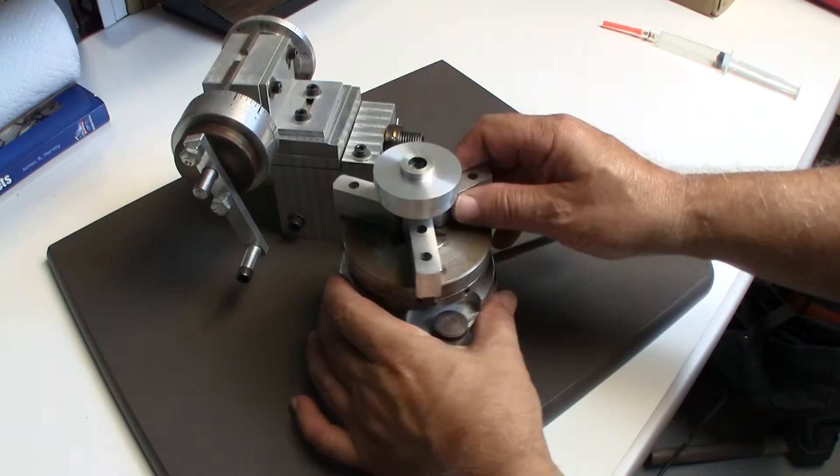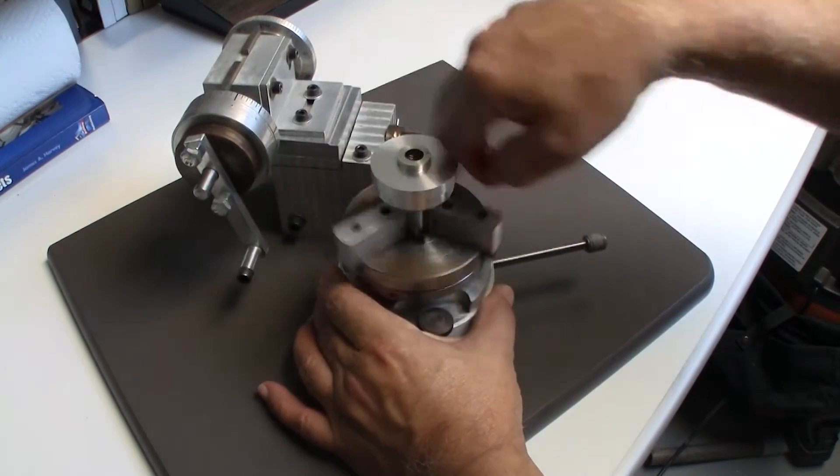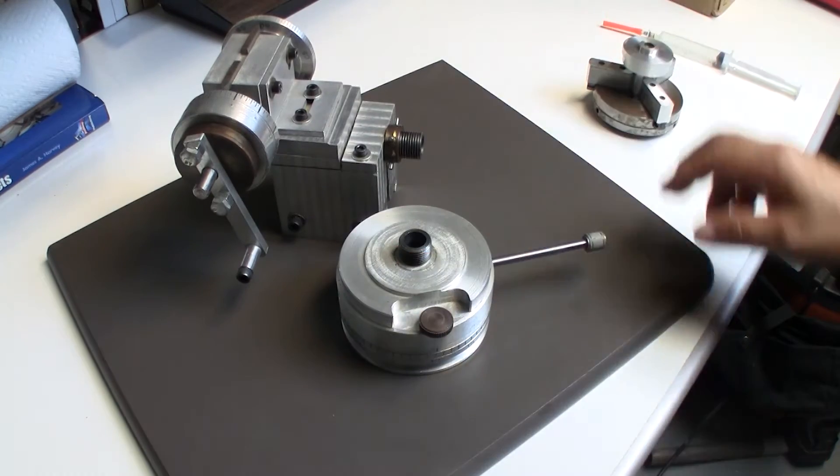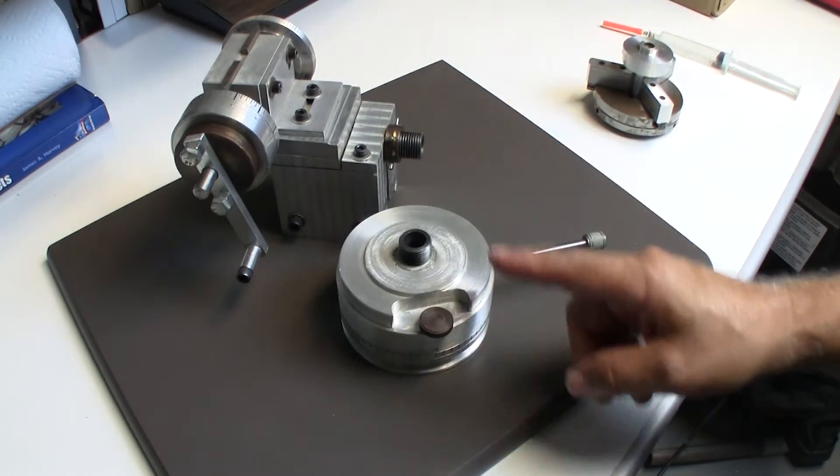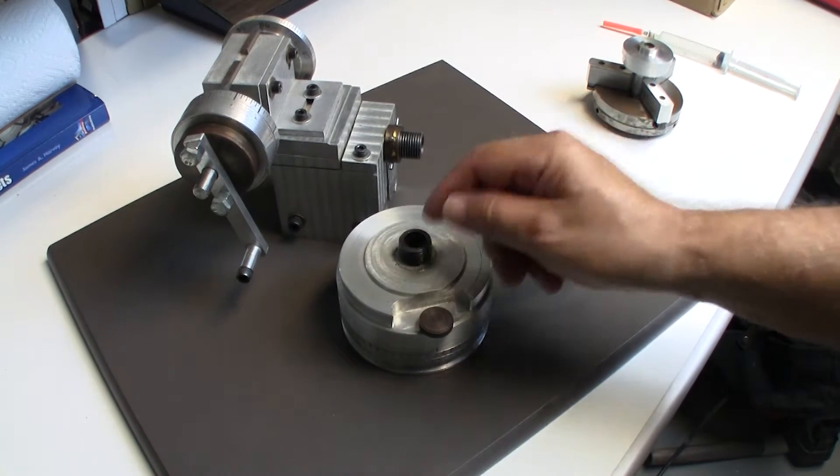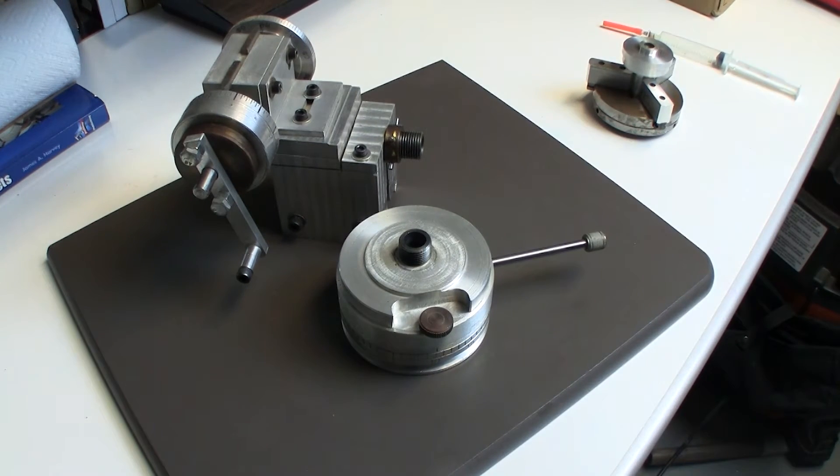As you can see, this tool is designed to have a 3/4-16 thread which matches the tag spindle, and also the internal taper which matches the tag collets.